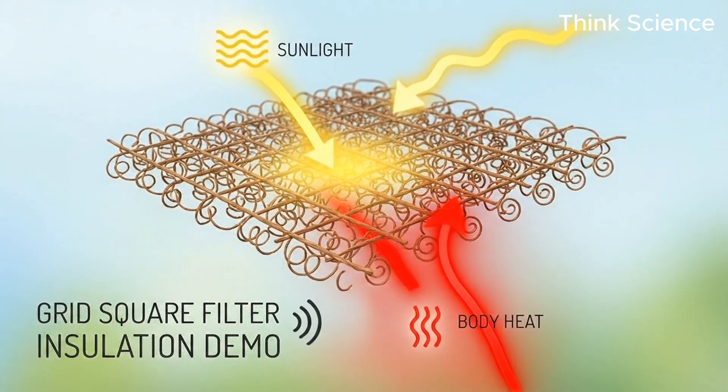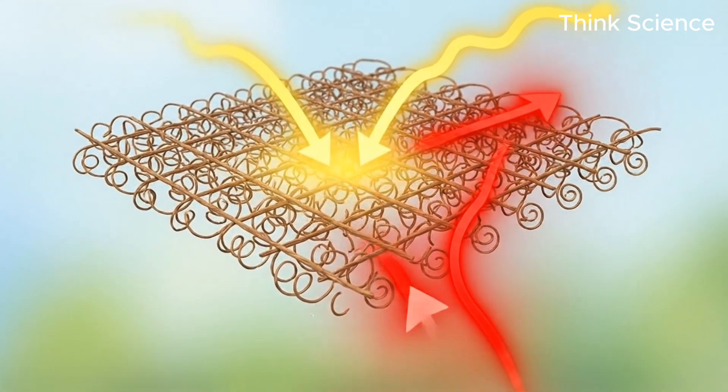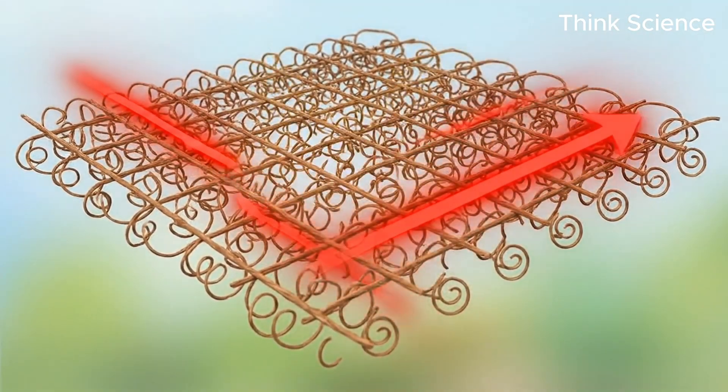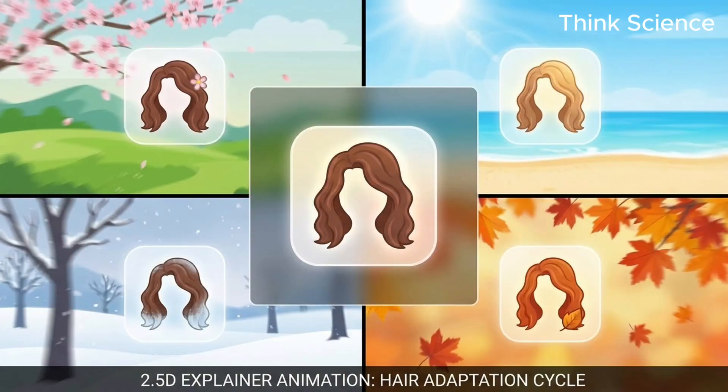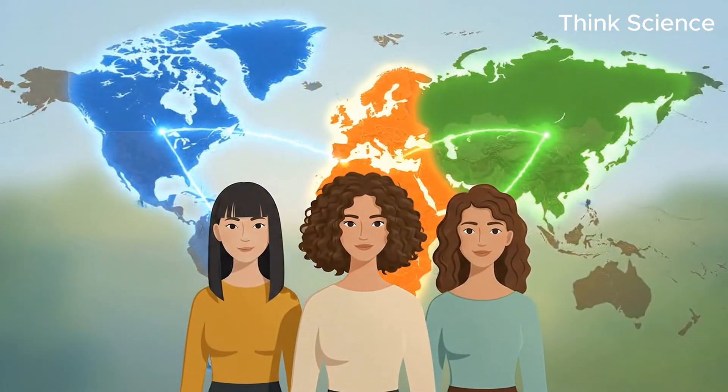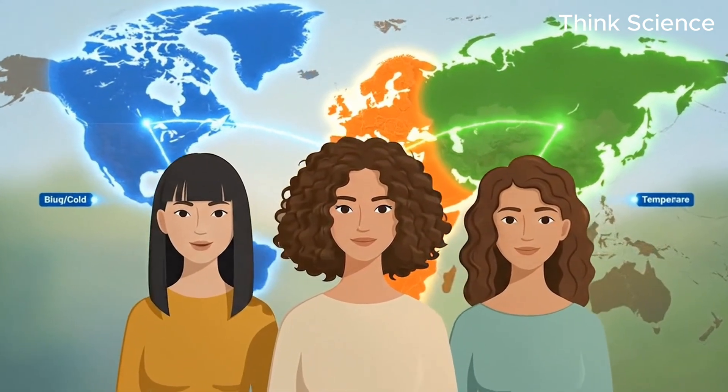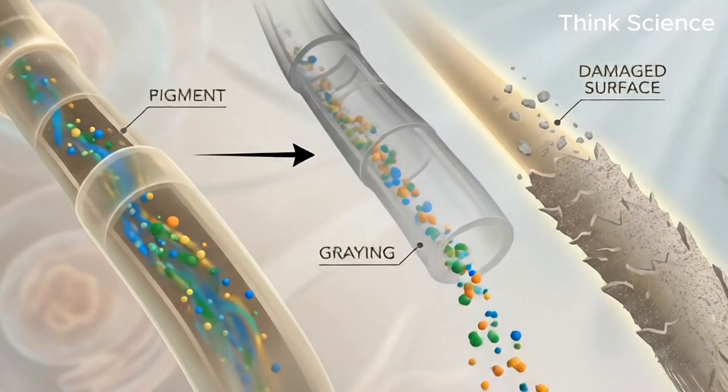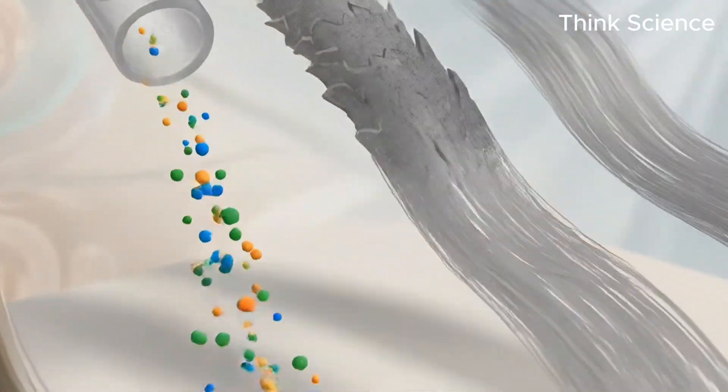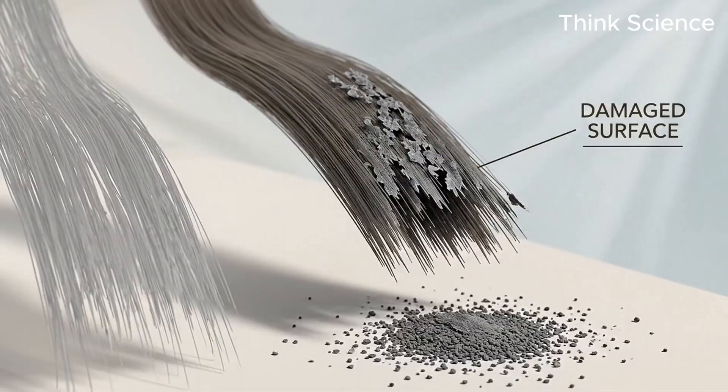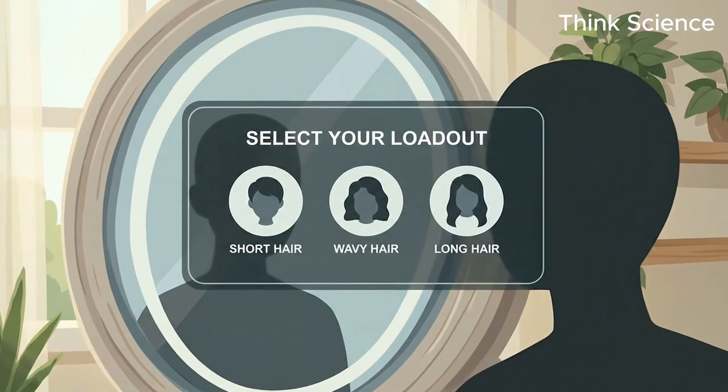When you combine thickness with shape, patterns appear. Fine, curly hair helps block sunlight while releasing heat. Thick, straight hair helps trap warmth and block cold wind. Wavy, medium hair sits in the middle, adapting well to changing climates. Even graying hair follows biology. As pigment fades, hair often becomes rougher and drier, because that pigment also helped keep strands smooth. Aging literally changes how your hair is built.